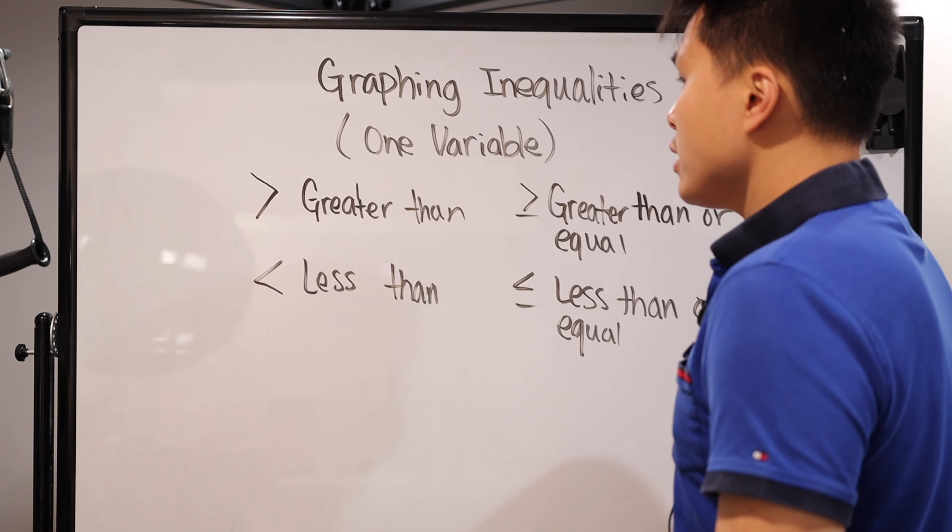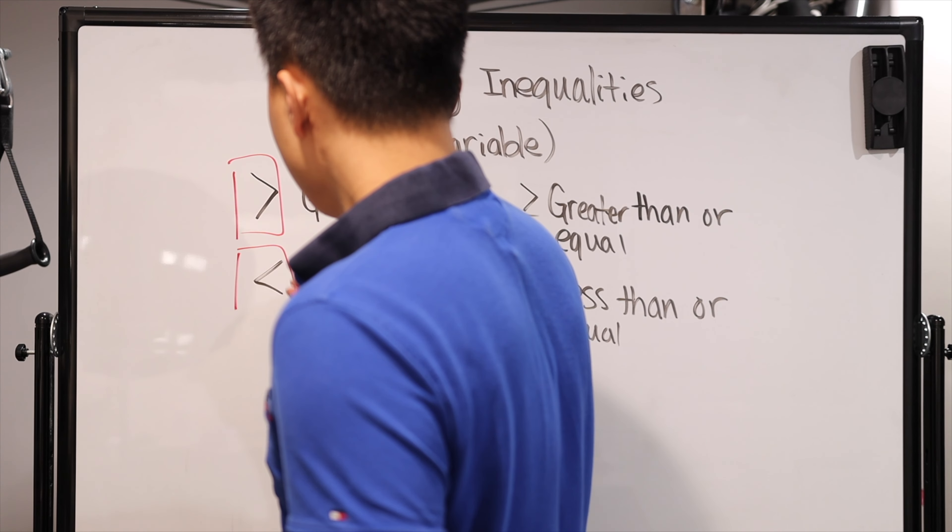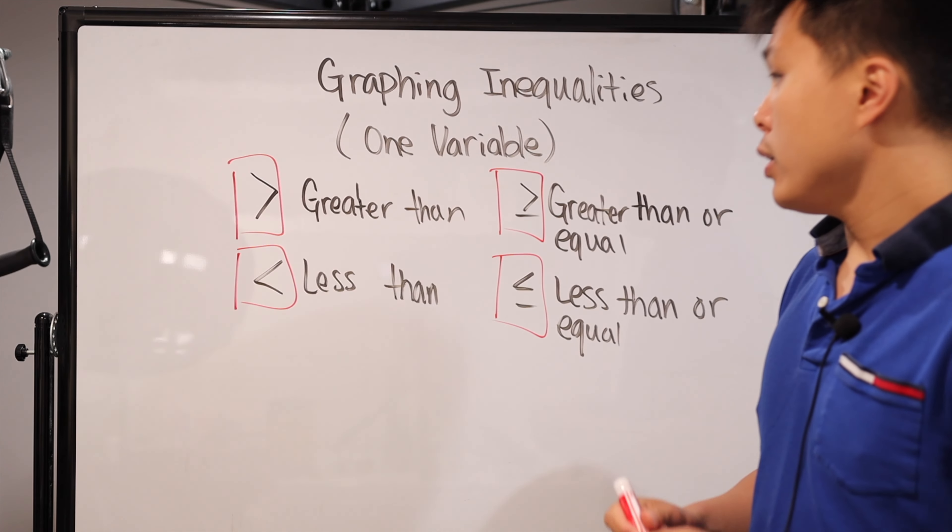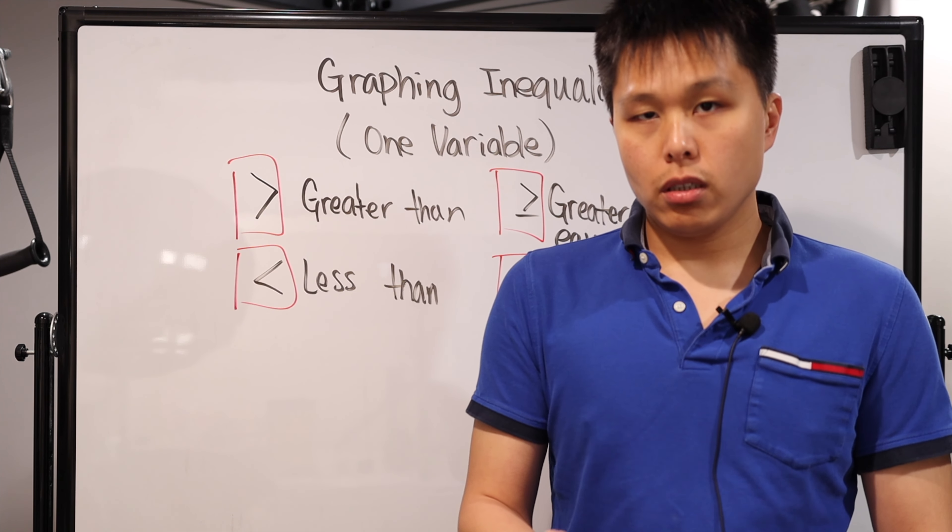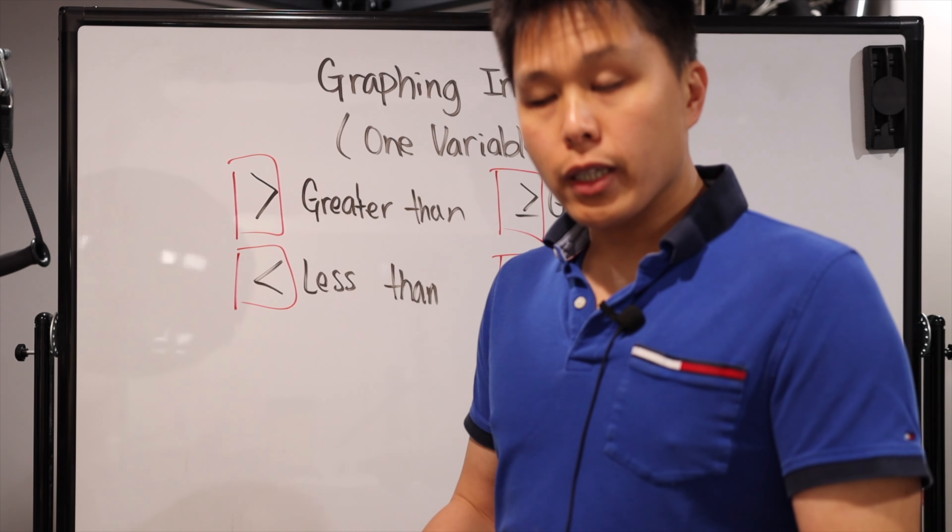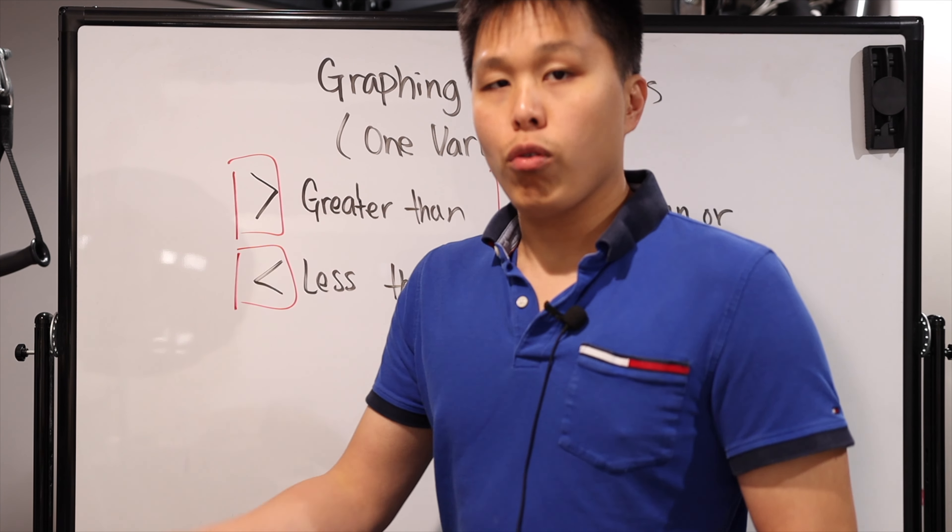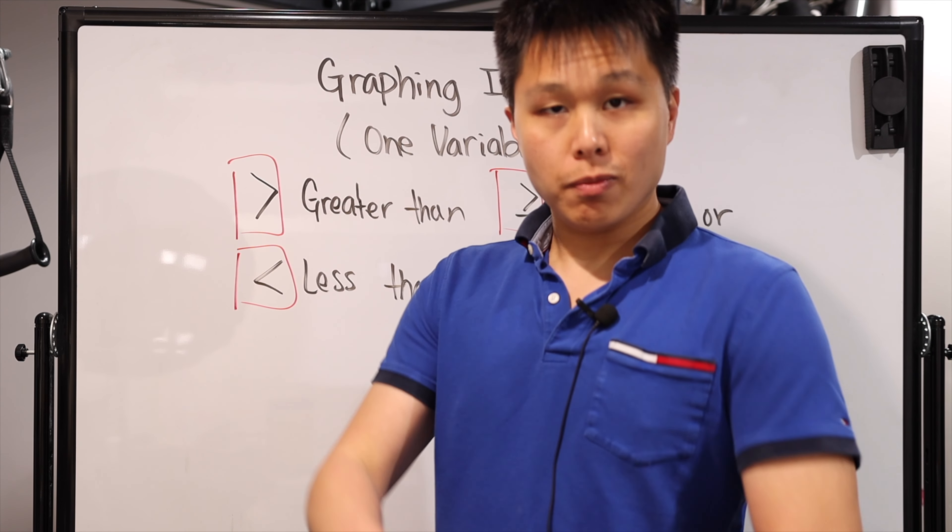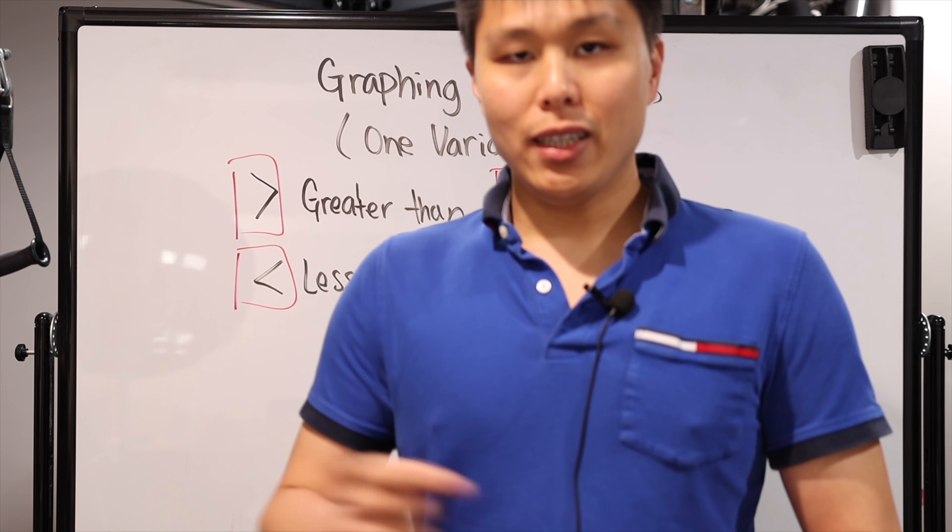But more importantly, I want you guys to look at just the symbol itself. Each and every one of these symbols, when I first was exposed to it from the students, they said another instructor taught them to think of it as arrowheads. The arrowhead will let you know, based on where the variable is, which direction you should fill in when you are graphing these inequalities. So keep that in mind, that they're arrowheads, they're pointing to a direction.